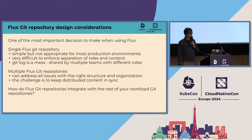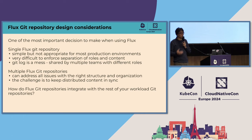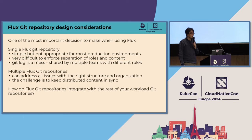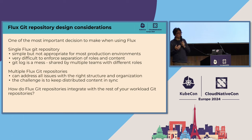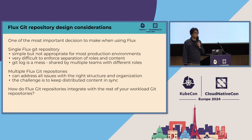If you're new to GitOps, the first thing you have to do is decide what kind of Git repositories and what layout you're going to use. A single repo is very easy to use to start with, and a lot of people use a single repo and then start adding more Helm charts and more clusters and run into issues. As your team grows, you'll have a single repo with a lot of commits, and it becomes very hard to enforce that only certain people can commit to production versus a test cluster.